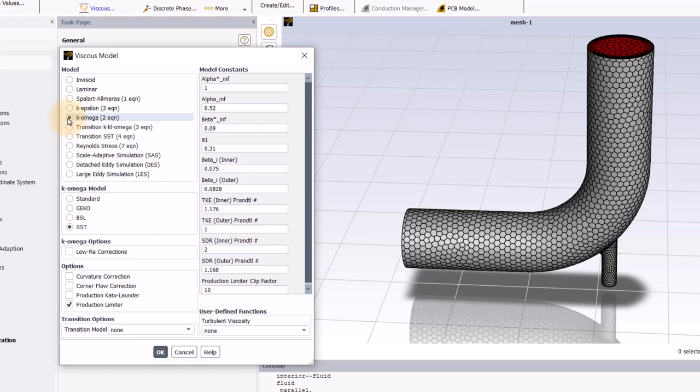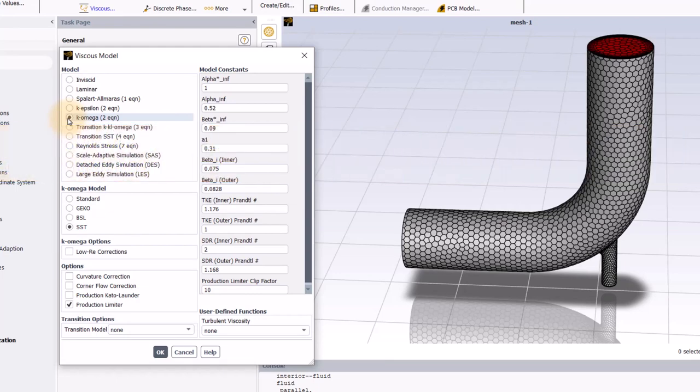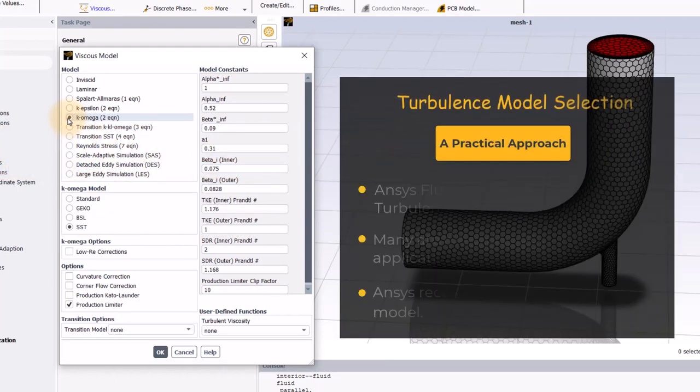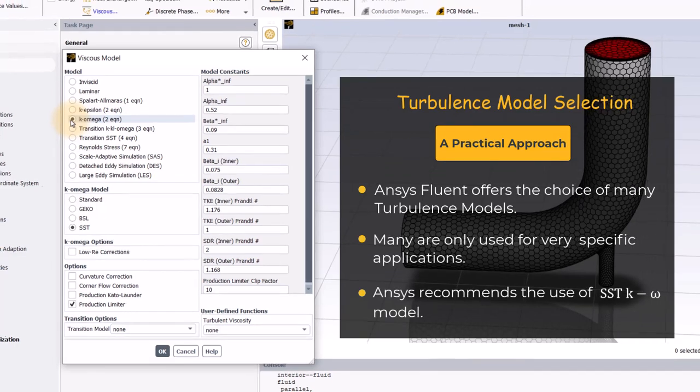Although, if you do want to learn more information about all of the models, advanced turbulence training is available. Anyway, to look at turbulence model selection in a practical light, ANSYS recommends the use of the SST k-omega model, which is the default.